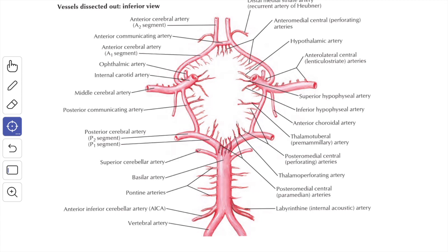Regarding the functional significance of the circle of Willis: normally, there is little or no mixing of blood streams of the two vertebral arteries in the basilar artery, or of the two anterior cerebral arteries in the anterior communicating artery. Therefore, the right half of the brain is supplied by the right vertebral and right internal carotid artery, and the left half by the left vertebral and left internal carotid artery. However, if one of the major arteries forming the circle of Willis is blocked, the circle provides various alternative routes for collateral circulation.